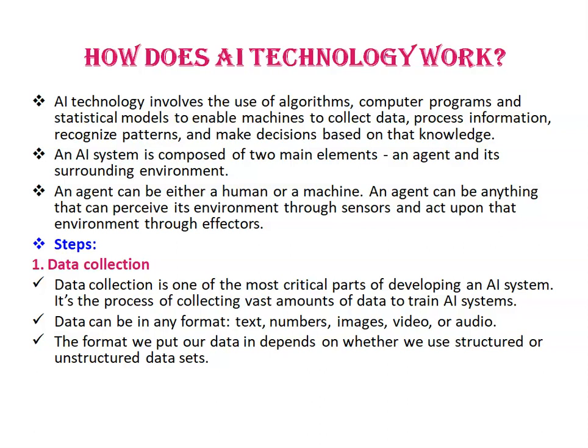Step one is data collection. Data collection is one of the most critical parts of developing an AI system — it's the process of collecting vast amounts of data to train AI systems. Data can be in any format: text, numbers, images, videos, or audio. The format depends on whether we use structured or unstructured data sets.